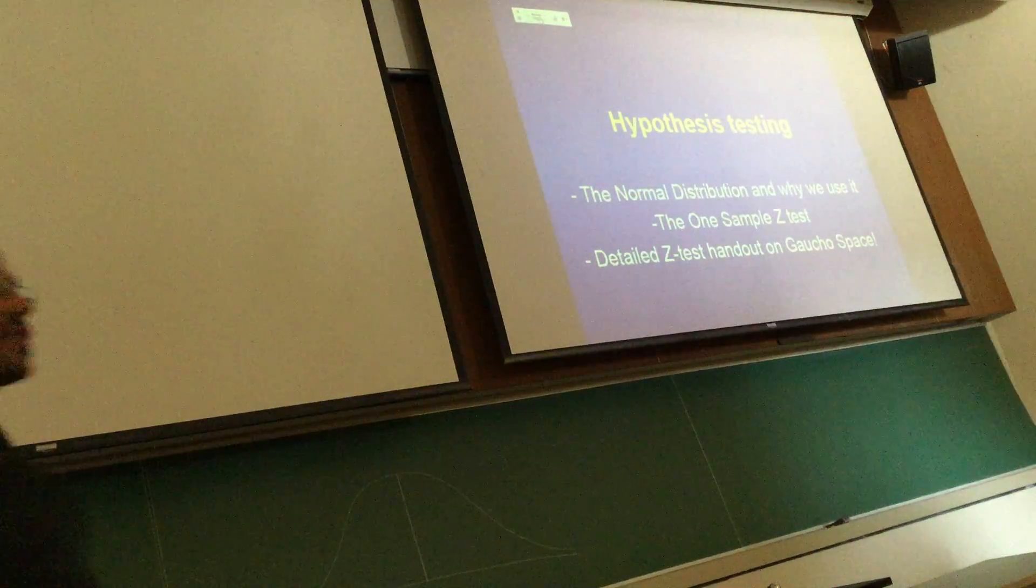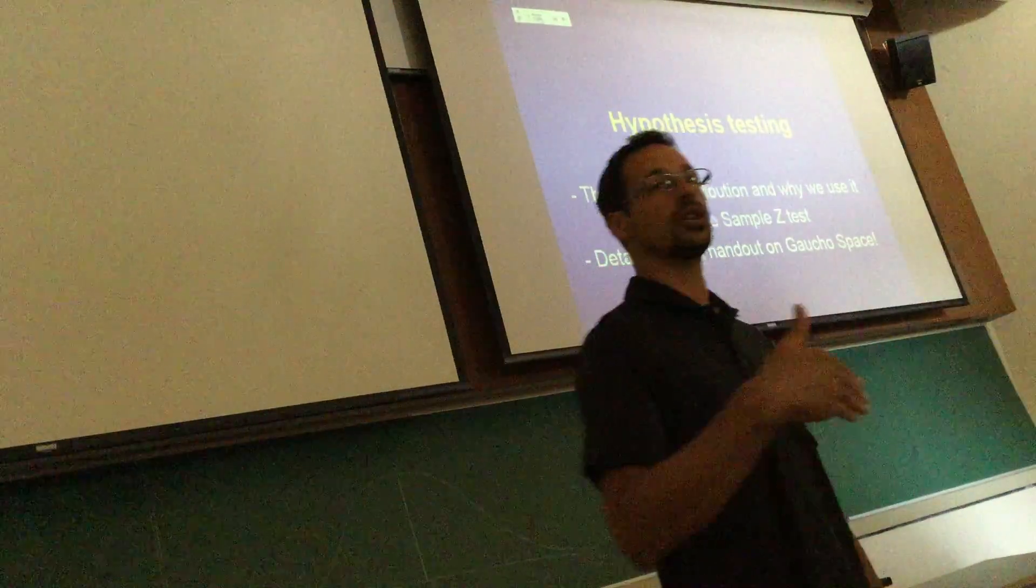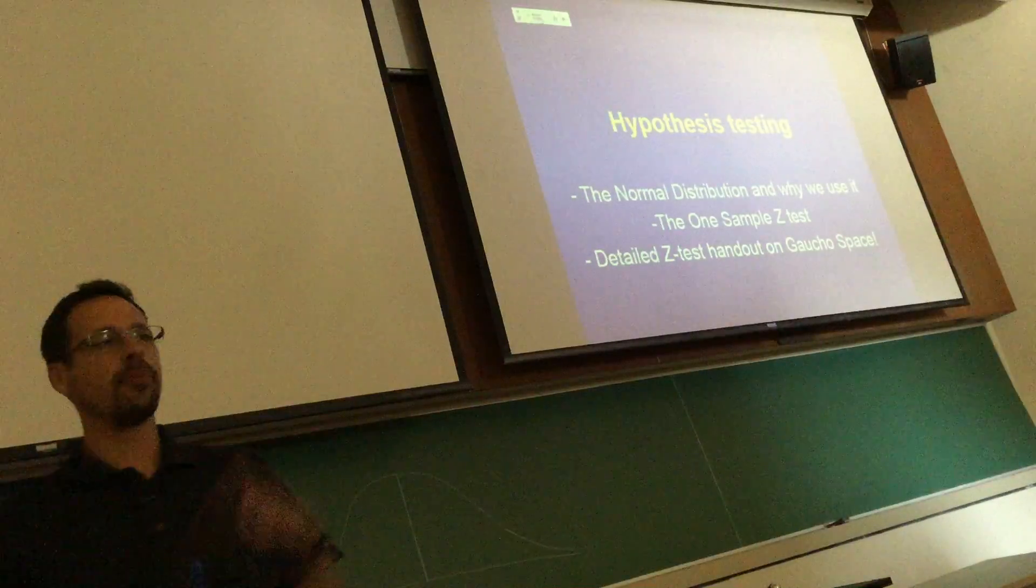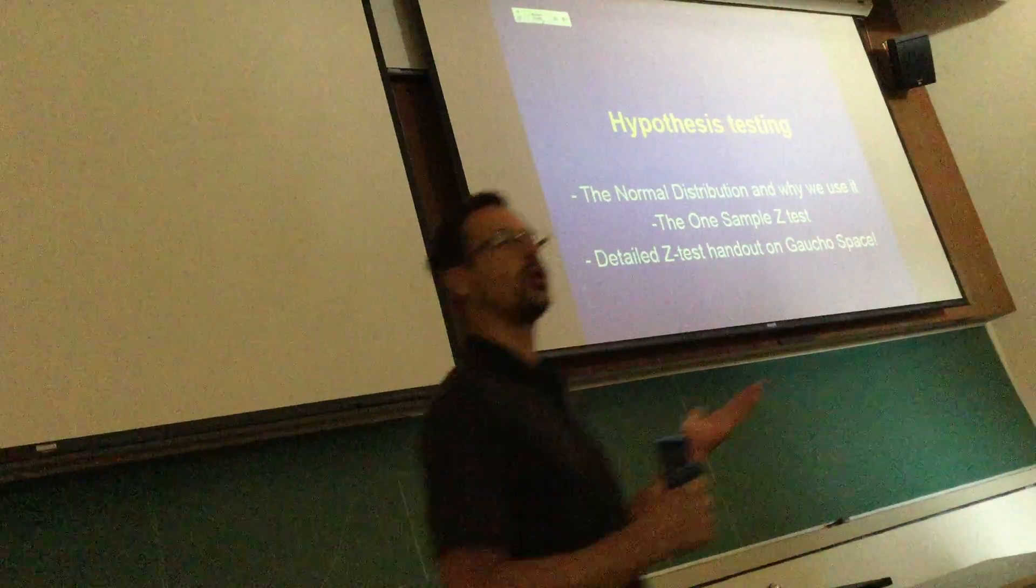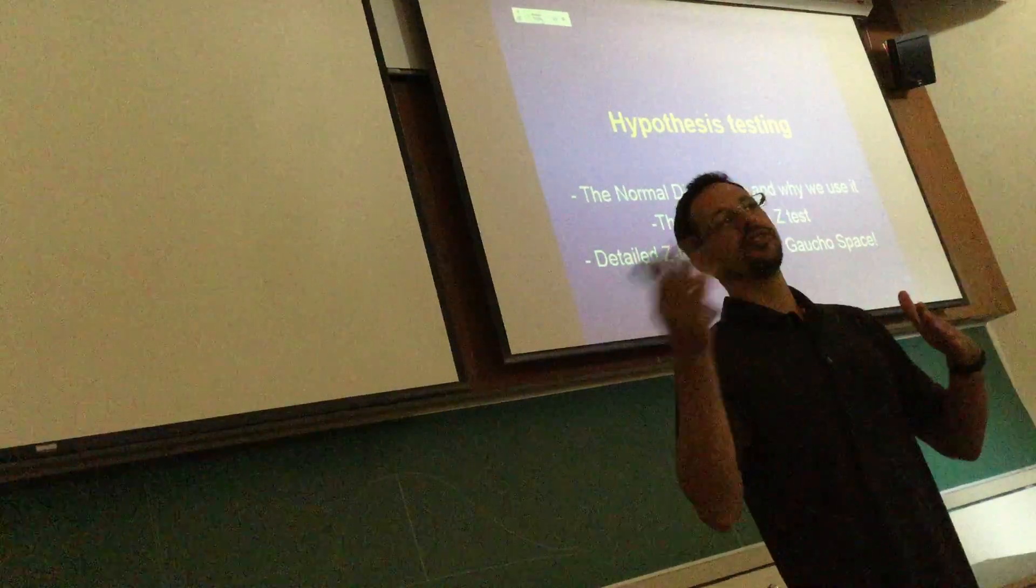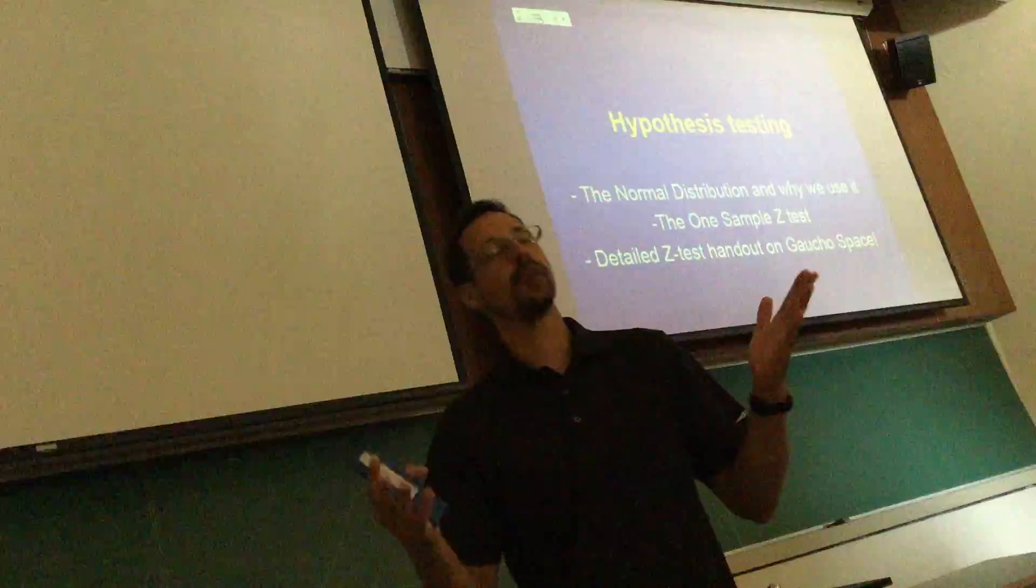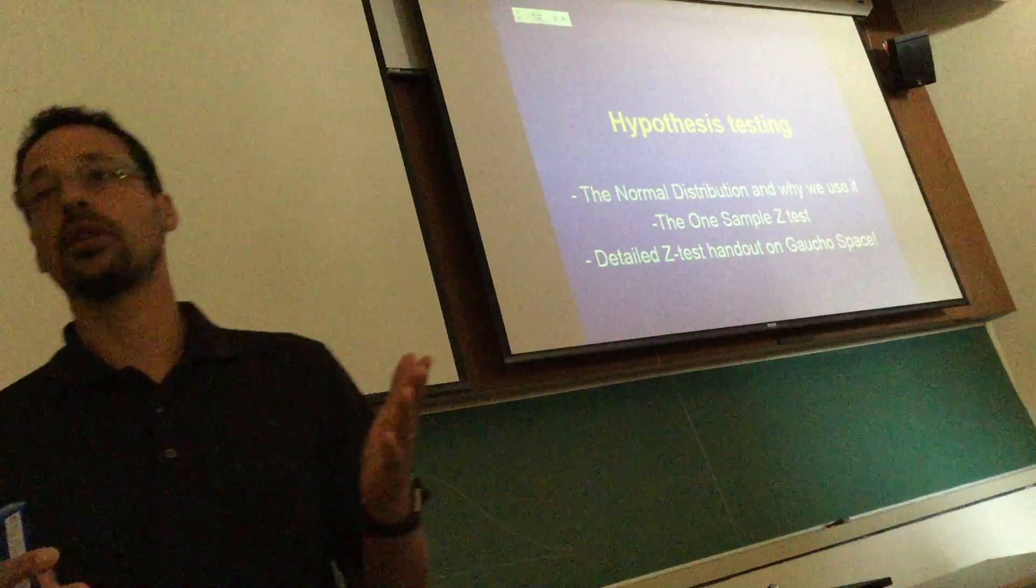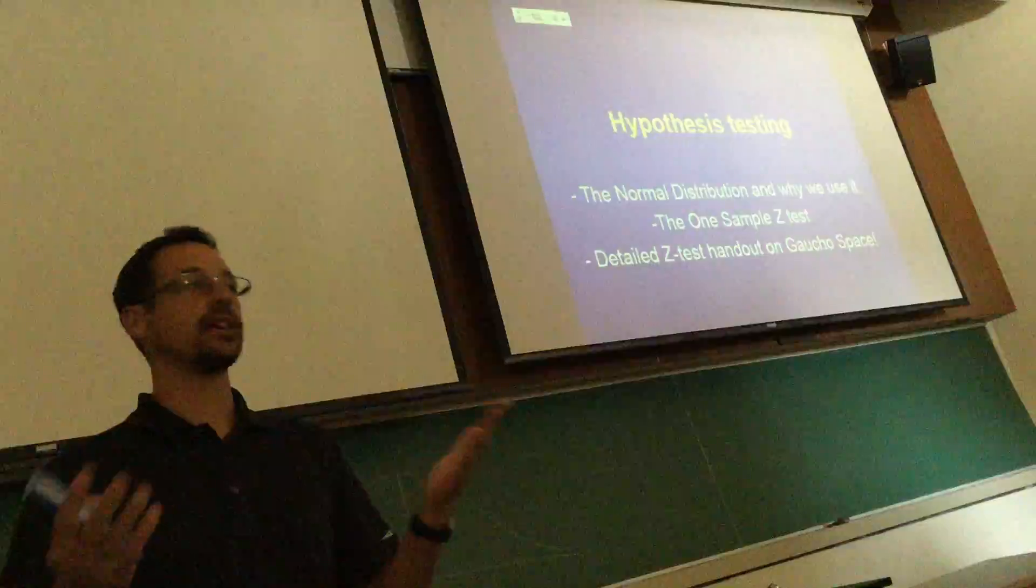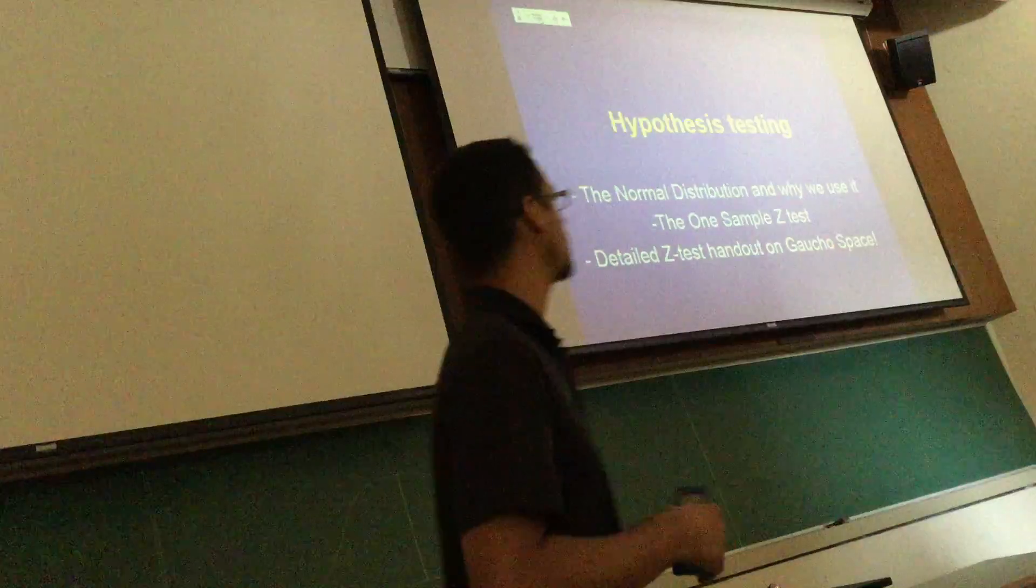We're going to use the one sample z-test today, which is if you have one score that you select out of that distribution, you can ask lots of different questions. For example, if I measure one person, the height of one person, where do they fall on this normal distribution? Are they in the 95th percentile, 75th percentile? For example, as you were growing up, the doctor always measured you, height and weight, and he'd give you a percentile. Everyone remembers that, right? So essentially what they're doing is using a z-score to see where you fall within that.